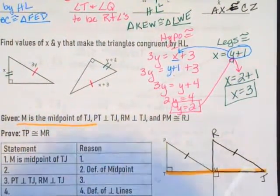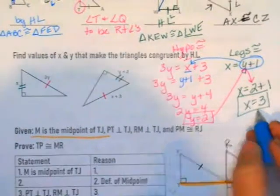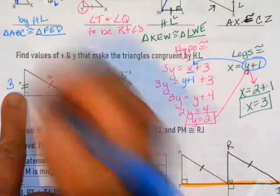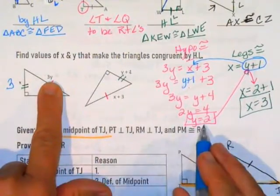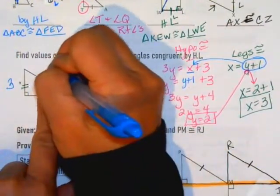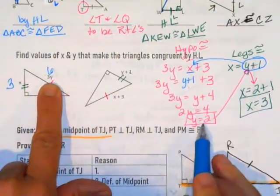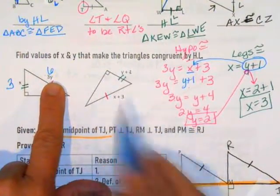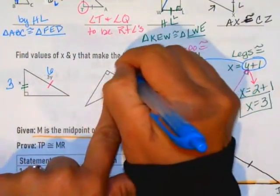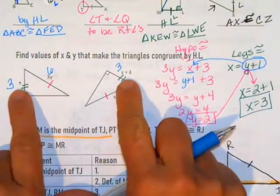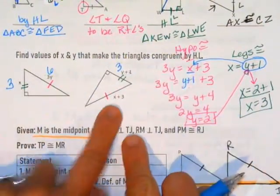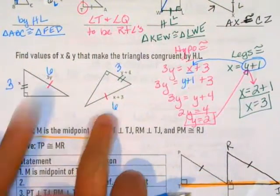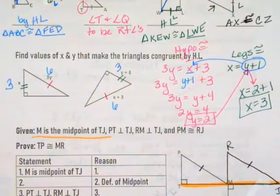I highly recommend putting your answers back into the problem to verify. X is 3 and Y is 2. For the legs: Y plus 1 equals 2 plus 1 equals 3, and X equals 3 — those legs are congruent. For the hypotenuses: 3Y equals 3 times 2 equals 6, and X plus 3 equals 3 plus 3 equals 6 — those hypotenuses are congruent. The solution checks out.